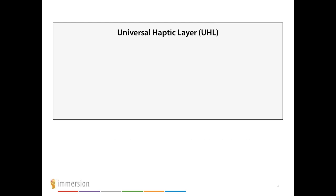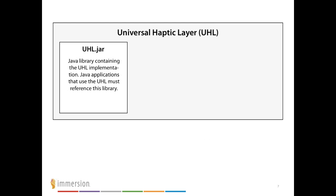The Haptic SDK consists of three files. The uhl.jar file is the Java library containing the UHL implementation. This includes the APIs to manage haptic effects and more than 100 pre-built haptic effects that you can use in your Android applications.